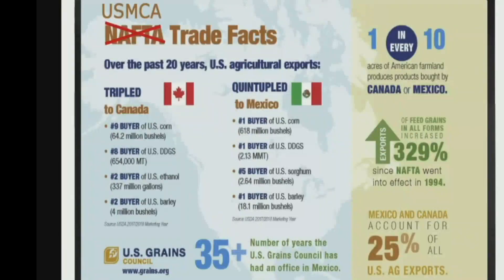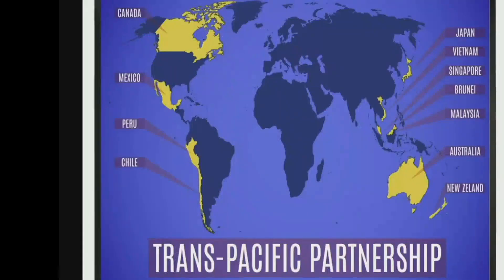There are also regional trade agreements involving fewer countries often located near each other, such as the USMCA, whose members include the United States, Mexico, and Canada. And the Trans-Pacific Partnership establishes a free trade area among 11 countries that border the Pacific Ocean.